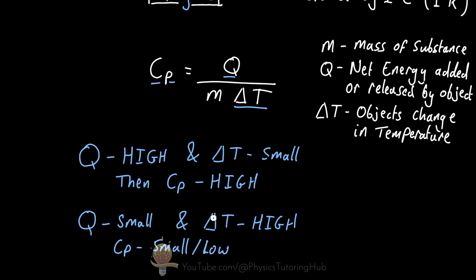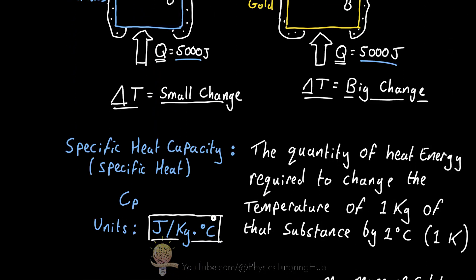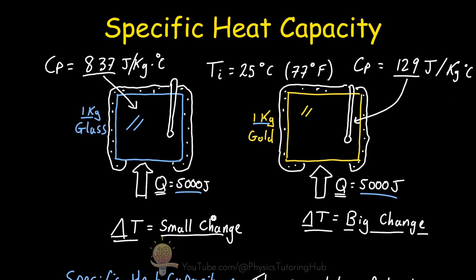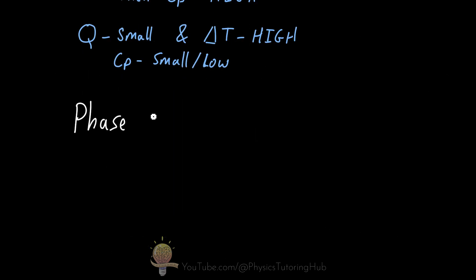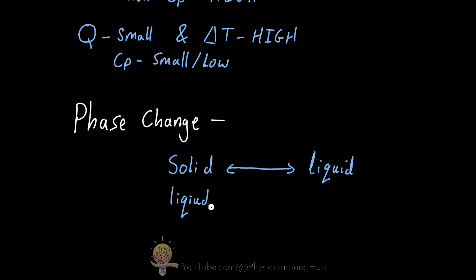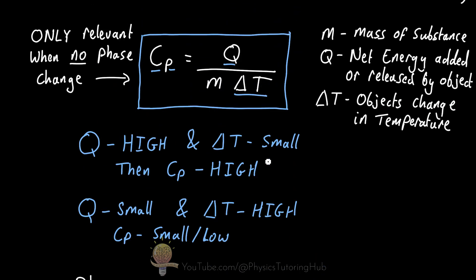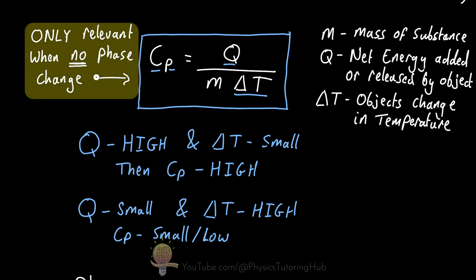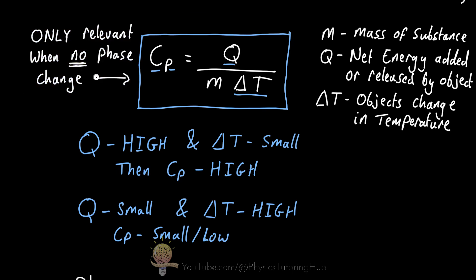This heat capacity equation only works when our substances are not undergoing a phase change. A phase change is when a substance is transitioning from a solid to a liquid, or a liquid to a gas — or the reverse, where a gas condenses into a liquid or a liquid solidifies into a solid. We can only use the specific heat equation if the substance's temperature change isn't large enough for the substance to change its phase.